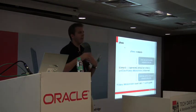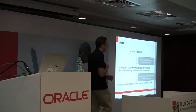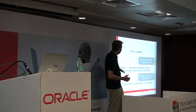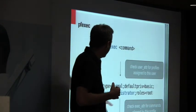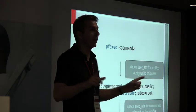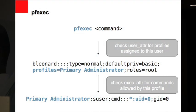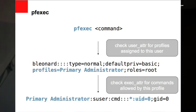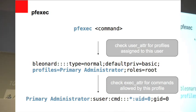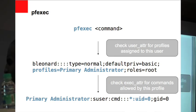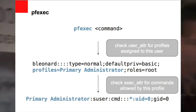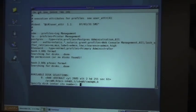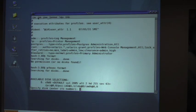pfexec is not running commands as the root user — it's running commands against whatever profiles I have. When I prefix a command with pfexec, it first checks which profiles are assigned to me in the user_attr file. The profile I have is primary administrator. That in itself is just a token, so then it looks in the exec_attr file and sees that the primary administrator can run anything as user ID zero, and then runs that command. So we prefixed the command with pfexec, and now it's showing me the one disk on my system: c0d0.